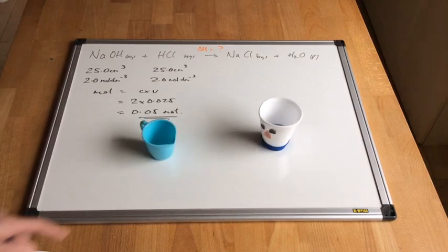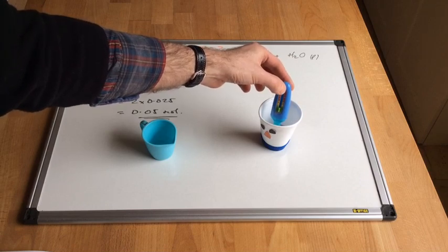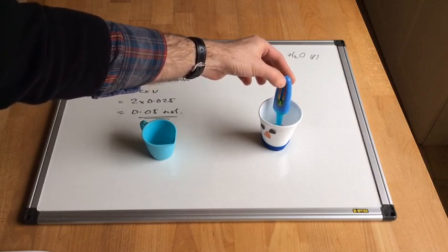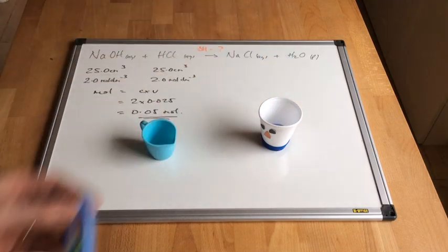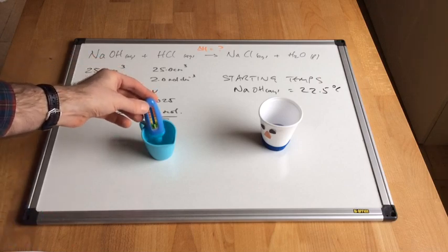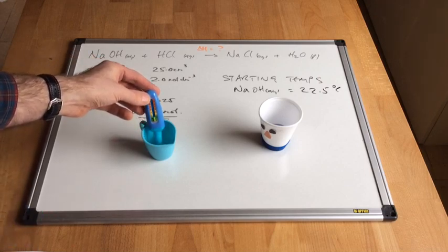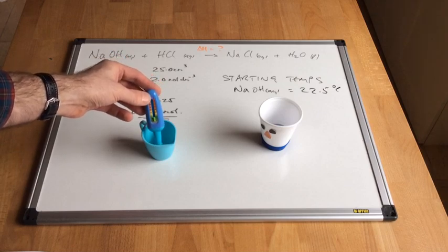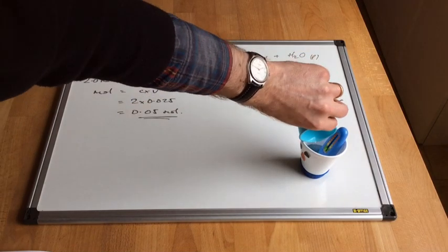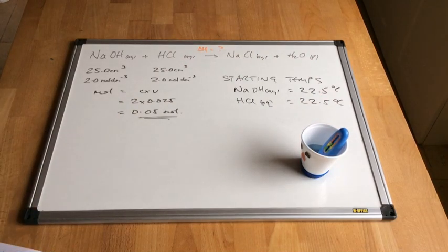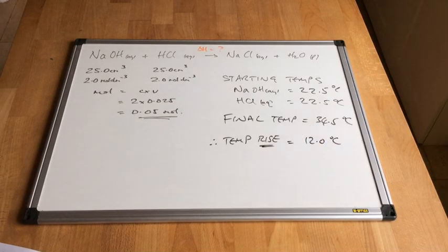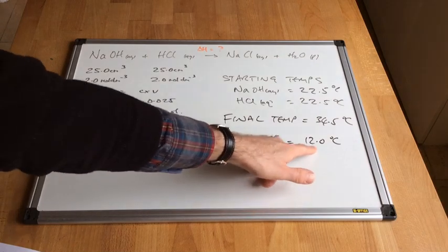I'm going to record the temperature of the sodium hydroxide first — it's inside the polystyrene cup. The thermometer is reading 22.5 degrees C. I'll do the same with the hydrochloric acid — that's exactly the same, 22.5 degrees C. I'm going to mix the two chemicals together now and watch the thermometer to record the maximum temperature. The thermometer has stopped rising and settled at 34.5 degrees C, giving a temperature rise of 12 degrees Celsius.